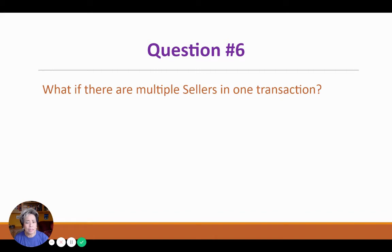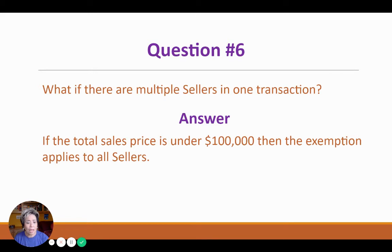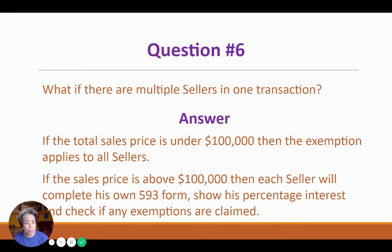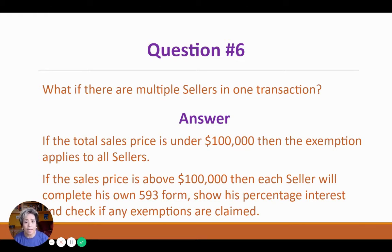Question number six: What if there are multiple sellers in one transaction? Well, if the total sales price is under $100,000, then the exemption is going to apply to all sellers. But if the sales price is above $100,000, then each seller will have to complete his own 593 form. He's going to show his own percentage interest on that form and check to see if any of the exemptions would apply to him.